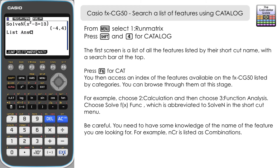If I press Combination here without having put anything in first, I've just got the last answer that's been brought up and then the C for combinations. What I need to do is delete that and put in some numbers. So if I've got an N of 8, then the C, and then R is 3 — 8C3 — well that's 56. If I'd written the N of 8 in first then I wouldn't have got that last answer. It's just getting used to the way that the calculator works and how you bring up the feature you want.